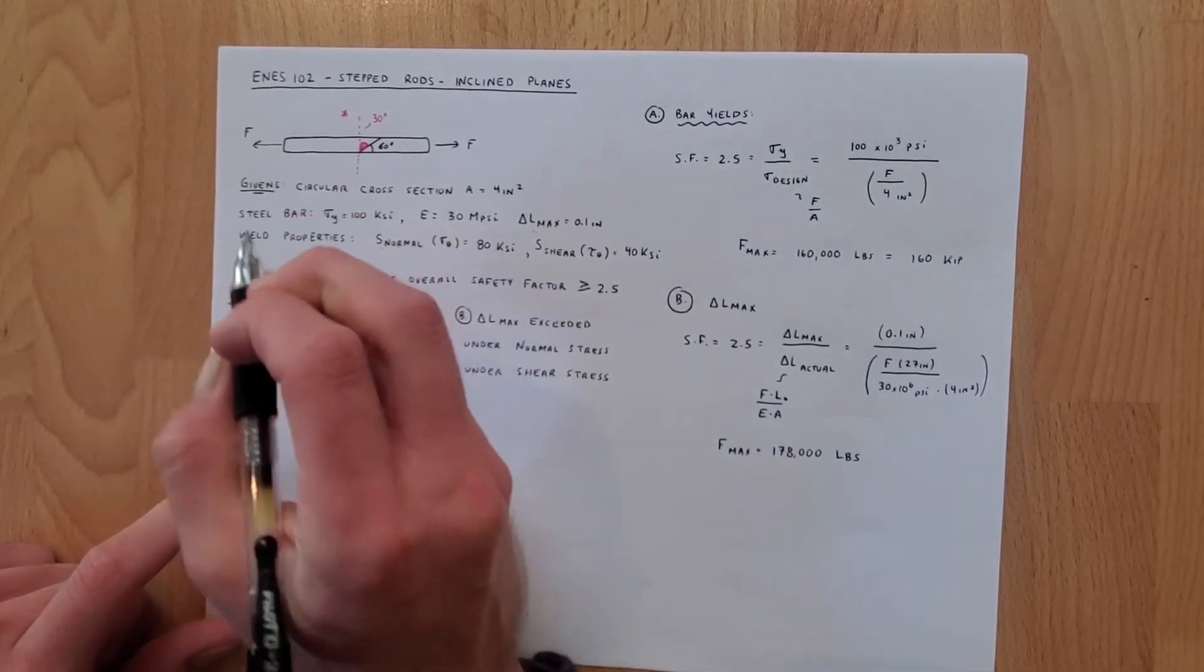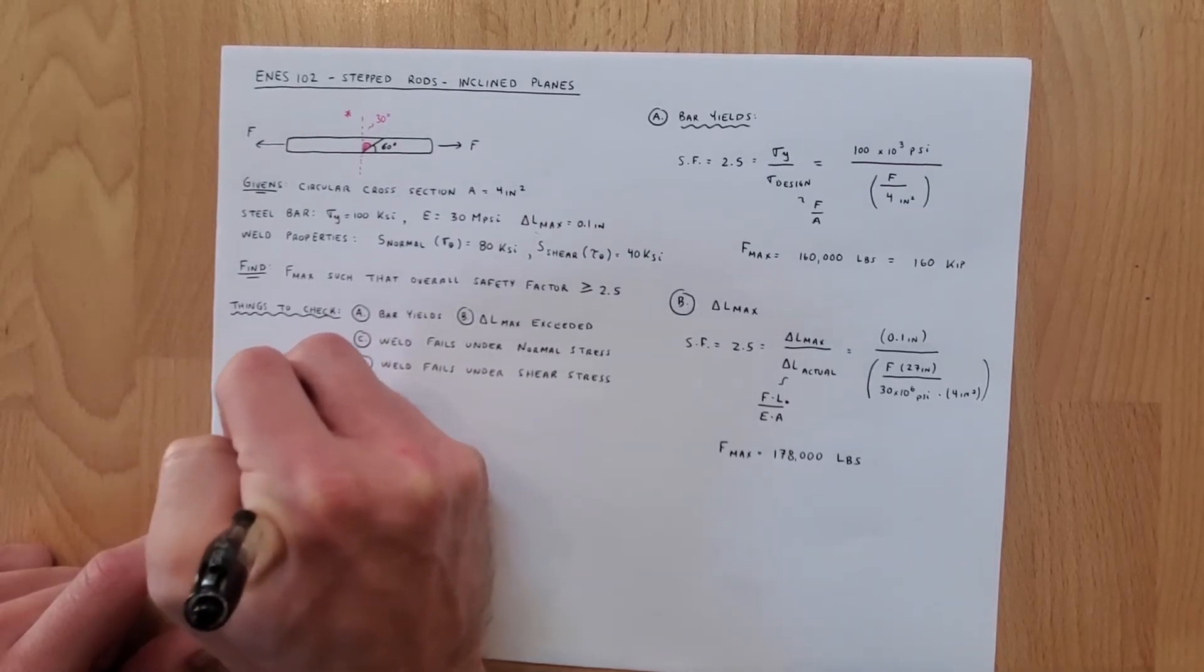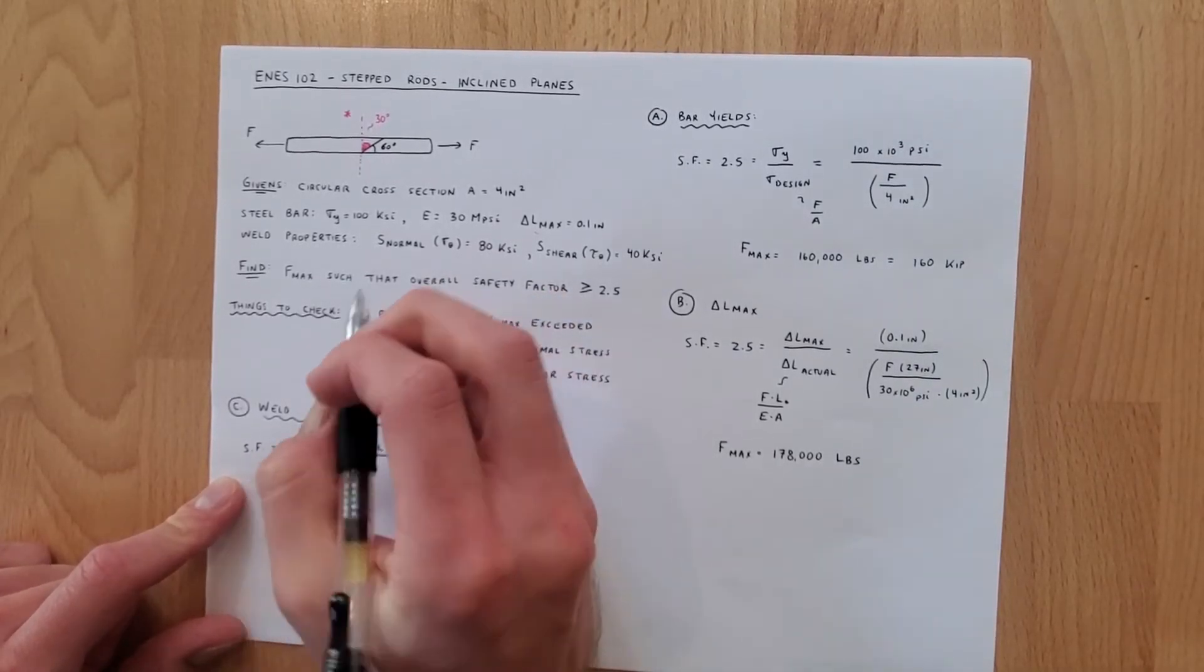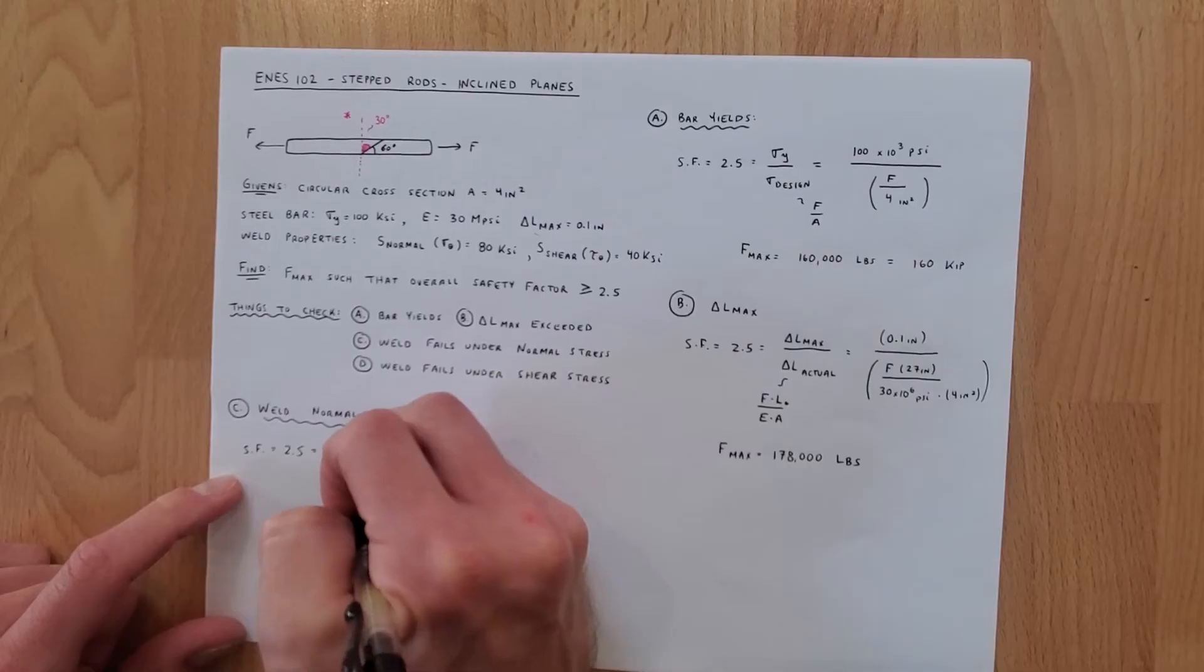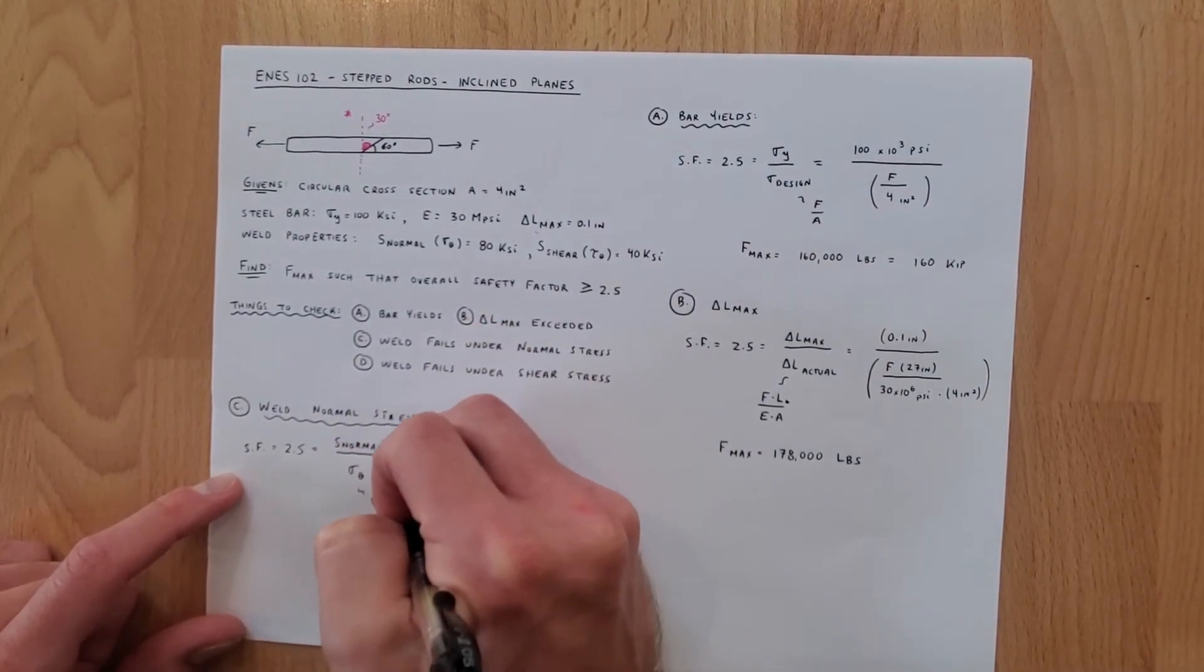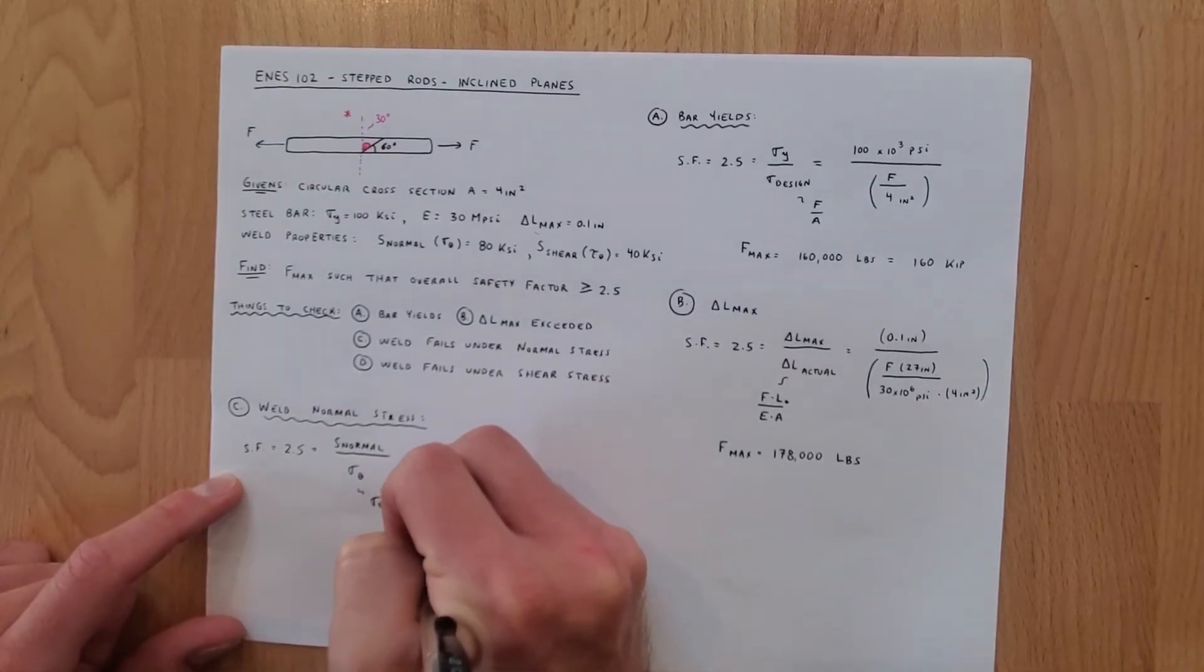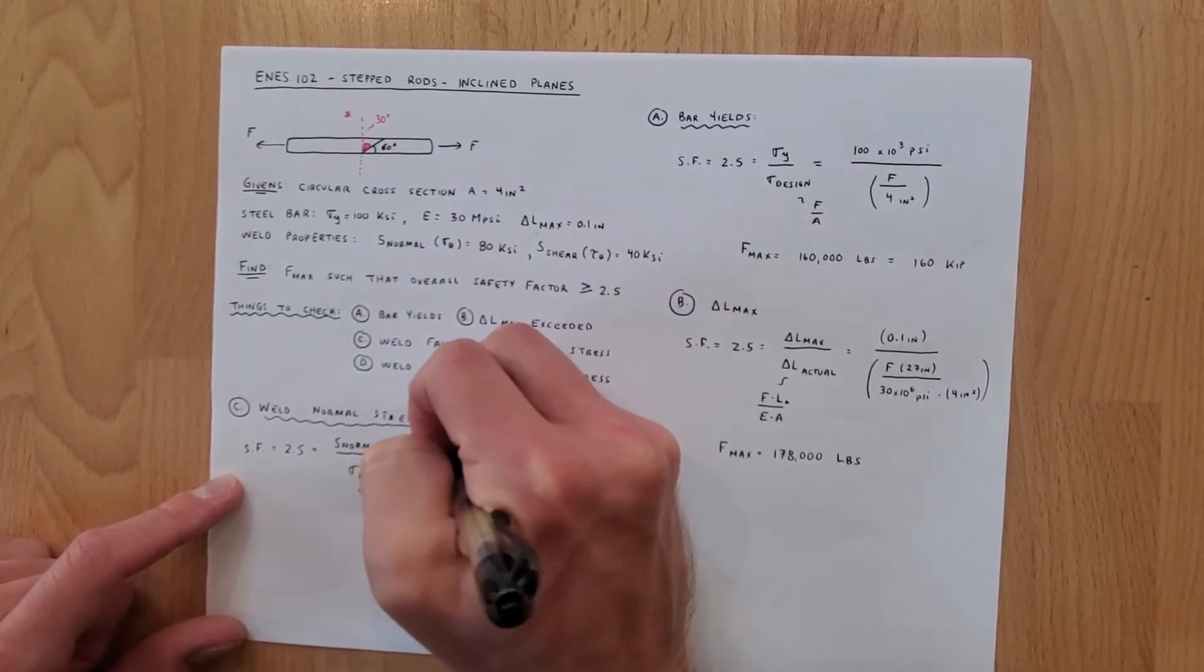Now we do is we'll check the weld for normal stress failure. Again we set the safety factor equal to 2.5 which we'll say is the strength normal of the weld which is our max limit over sigma theta. And recall from before that our equation for sigma theta is equal to sigma times cosine squared theta which is effectively going to be equal to in this case f over a cosine squared of theta.